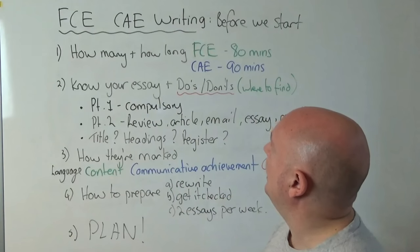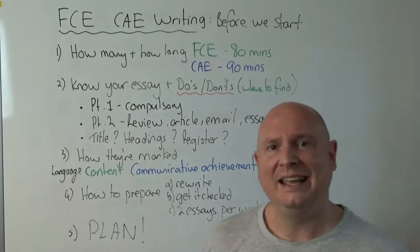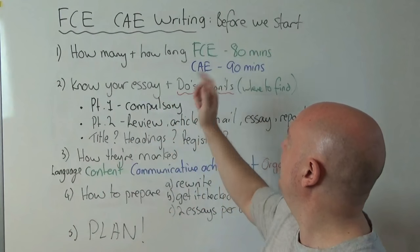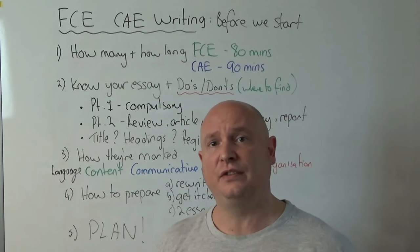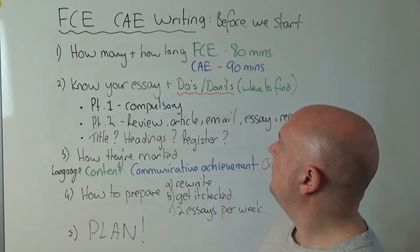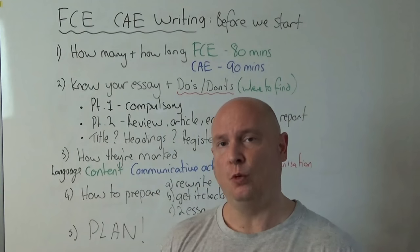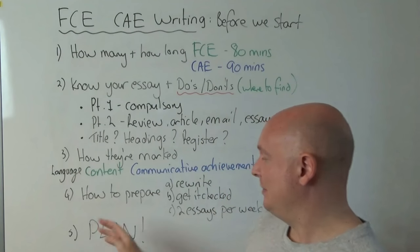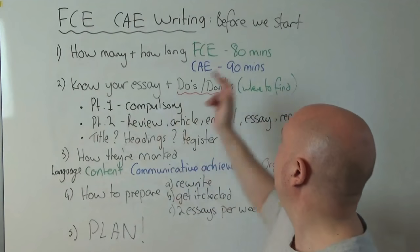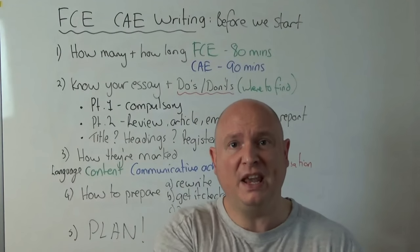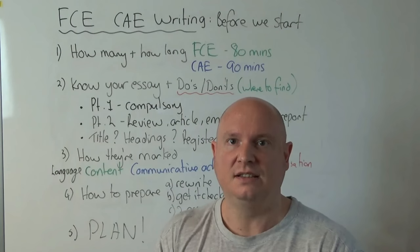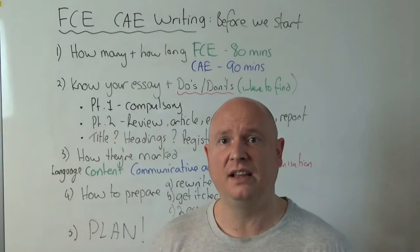Let's look at number one: how many essays and how long. For FCE you have 80 minutes with two essays — that's 40 minutes per essay. For CAE you've got 90 minutes with two essays — 45 minutes per essay. This is really important: you have to plan your essays. For FCE, dedicate 25 minutes to planning, then 15 minutes to copy it over to the exam paper. If you don't do that, you're going to produce a poor essay.